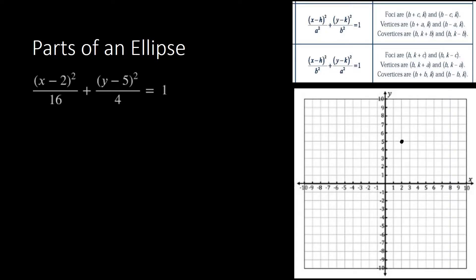We will be using our formula for finding the different parts of the ellipse. So let's start with (x minus 2) squared over 16 plus (y minus 5) squared over 4, equal to 1. In our formula, we have (x minus h) squared over a squared plus (y minus k) squared over b squared equal to 1. Our foci is determined by h plus or minus c, comma k — that is for horizontal orientation.